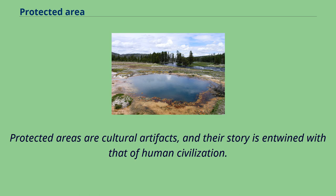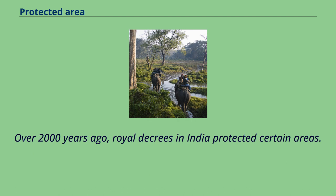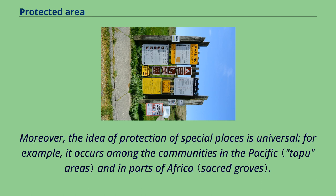Protected areas are cultural artifacts, and their story is entwined with that of human civilization. Protecting places and natural resources is by no means a modern concept, whether it be indigenous communities guarding sacred sites or the convention of European hunting reserves. Over 2,000 years ago, royal decrees in India protected certain areas. In Europe, rich and powerful people protected hunting grounds for a thousand years. The idea of protection of special places is universal, occurring among communities in the Pacific and in parts of Africa.